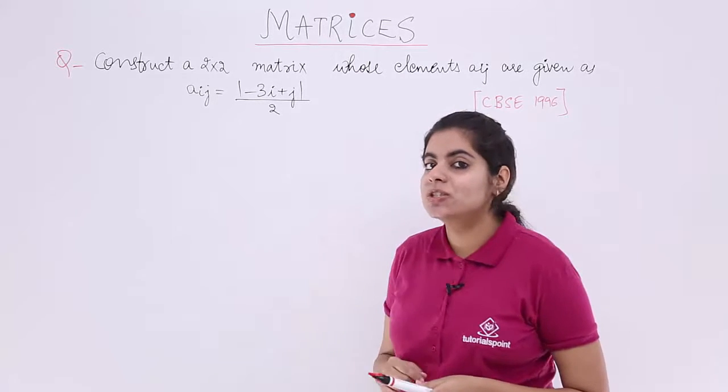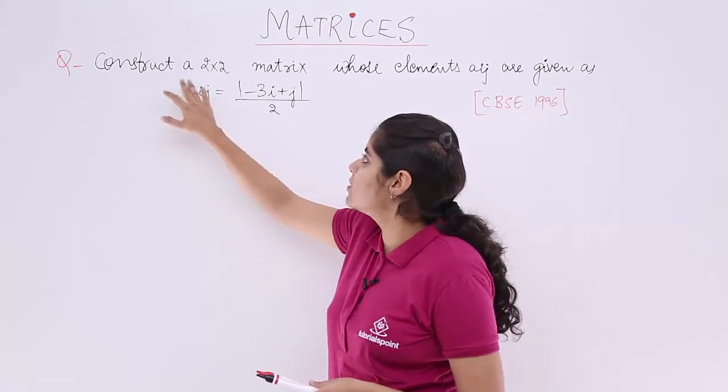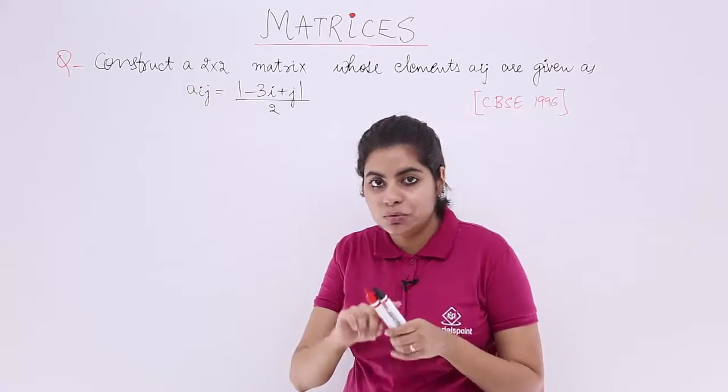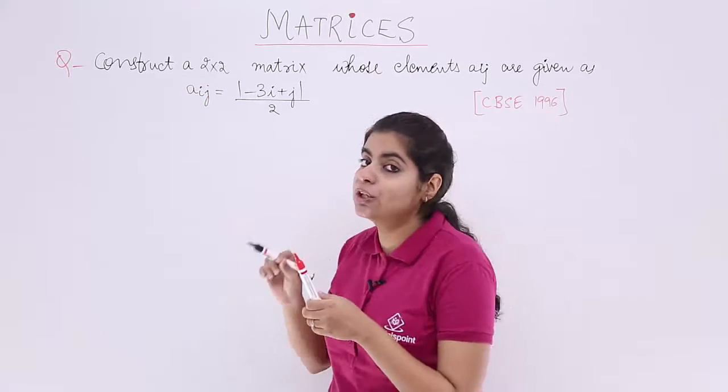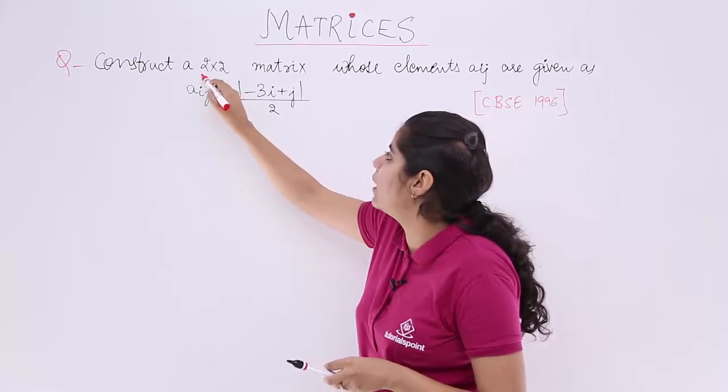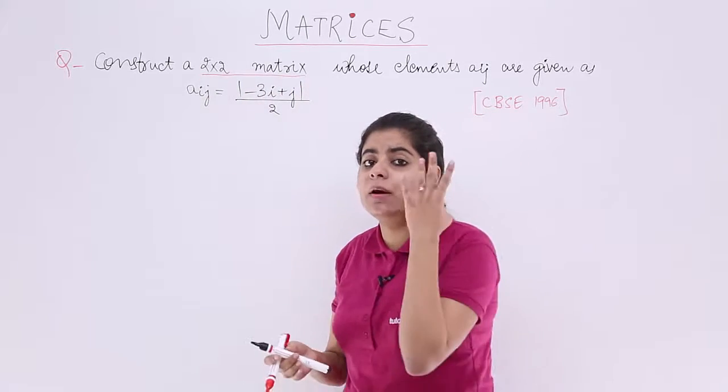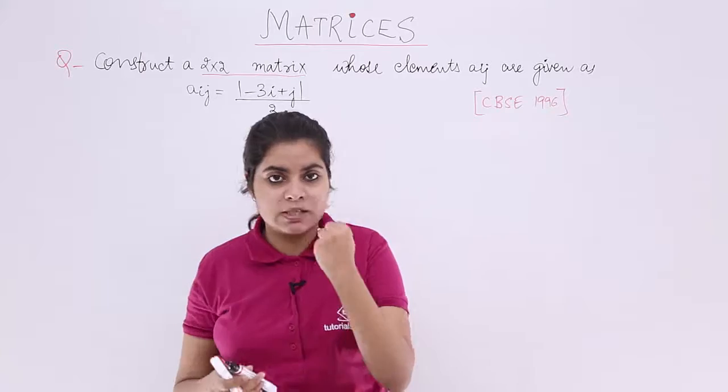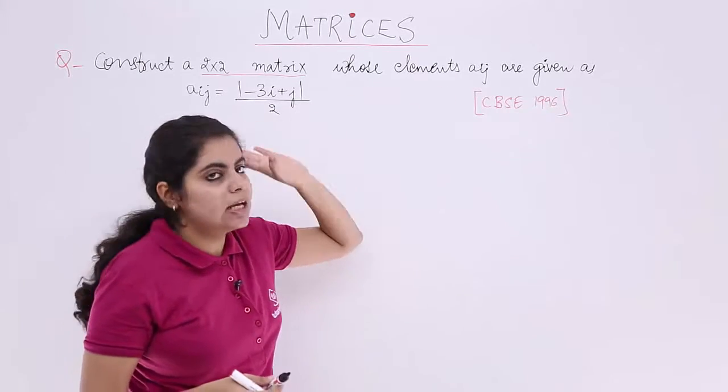Now the question is construct a 2 by 2 matrix. So first of all note what is the order? The order is 2 by 2. That means in all we will be having 4 elements. 2 into 2 is 4 and the elements Aij are given to me.